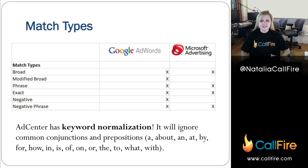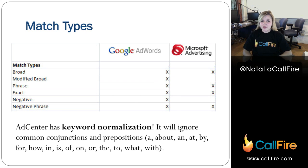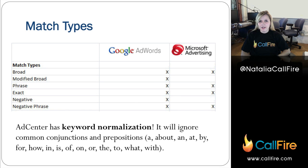The different match types is something that you really do have to think about when you're doing this. Both engines have broad match. Modified broad match is something AdWords did recently, and AdCenter does not have it. It's something to keep in mind that if you're learning how to use modified broad match in AdWords, this isn't something you're going to be able to do in AdCenter, and it's something you're going to have to compensate for.